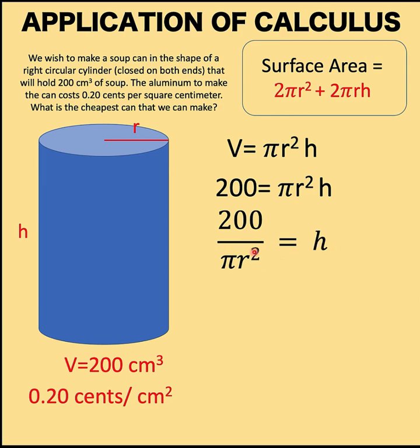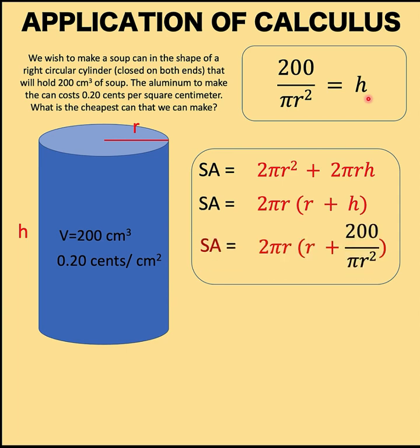Now let's substitute this value for h into the surface area formula. So we now have SA = 2πr times the quantity (r + 200/πr²). Here we just factor out the common factor 2πr. This is the total surface area of the aluminum needed to create this can.